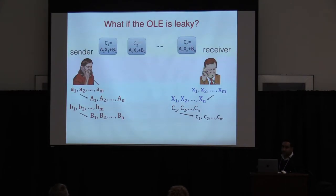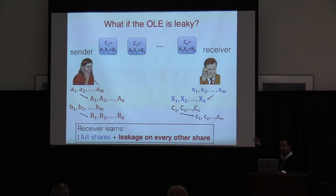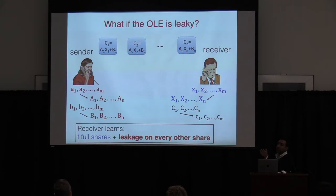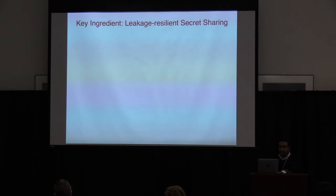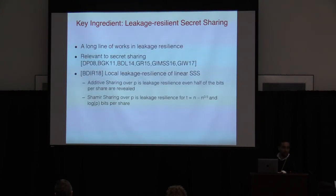If you use a leaky OLE to implement each server's multiplication, the adversary learns T full views of the servers due to the watch list. In the rest of the servers, whatever the OLE leaks, it leaks. We show how to accommodate a leaky OLE. If we use a leakage-resilient secret sharing scheme, the same IPS compiler works as long as the small leakage on the remaining servers does not affect security. There have been several works on leakage-resilient secret sharing, including Ben Amuda et al. from Crypto 2018.